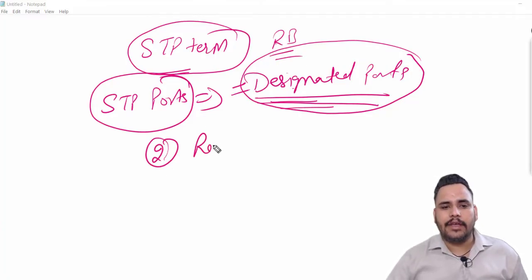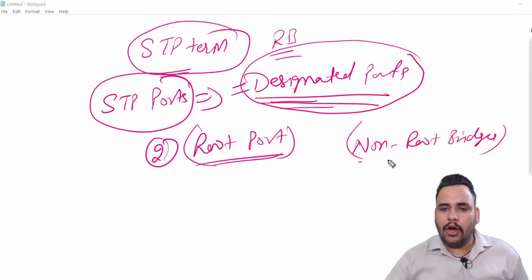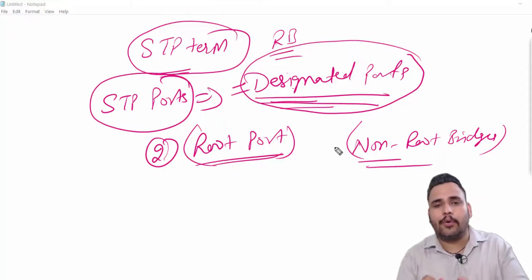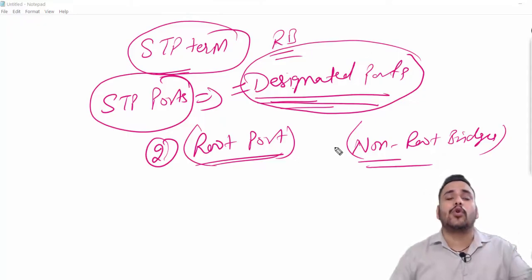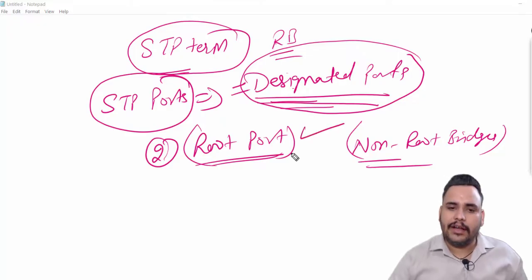The second term is the root port. Root ports are basically made on non-root bridges. The non-root bridge's best port with best cost to reach root bridge is known as root port. It can also be forwarding and can receive information.